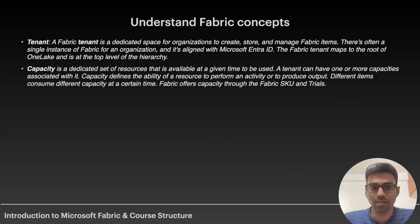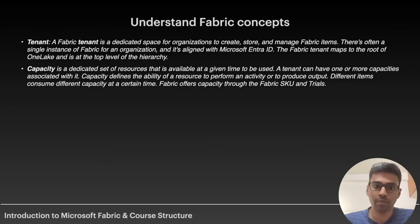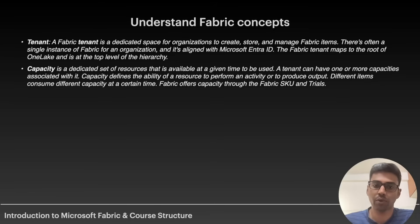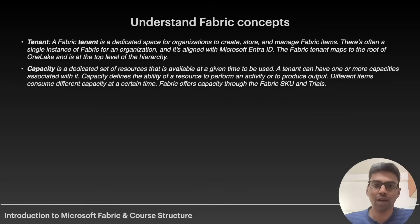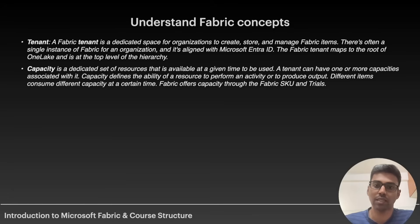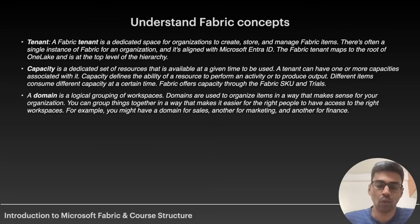Capacity is a dedicated set of resources available at any given time. A tenant can have more than one capacity associated with it. Capacity defines the ability of a resource to perform an activity or produce output — you can think of it as the compute resources required to perform the job. Different items consume different capacity at a given time. Fabric offers capacity through Fabric SKUs and trials, which we'll explore in the next video on planning and managing the DA environment.